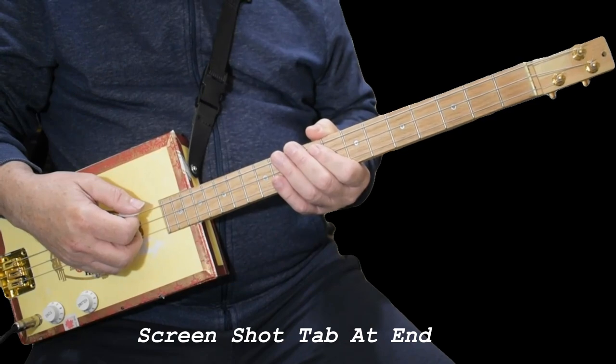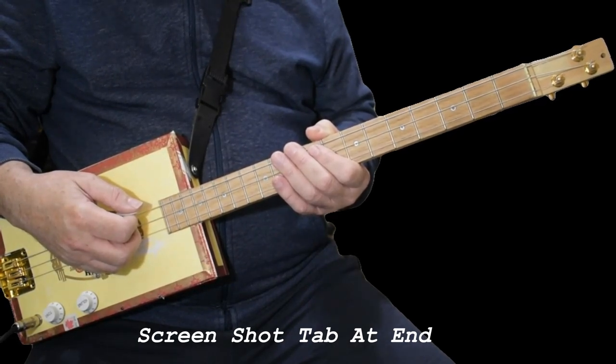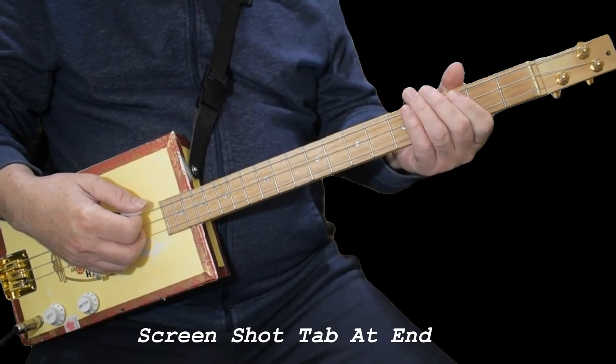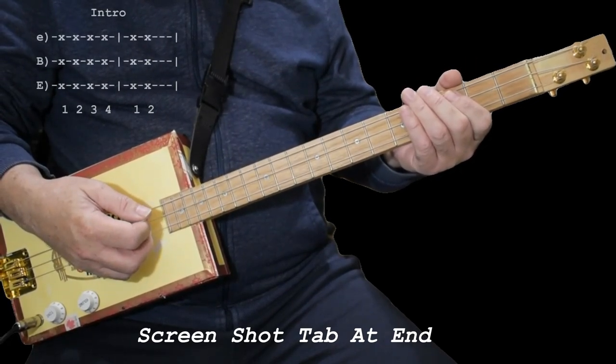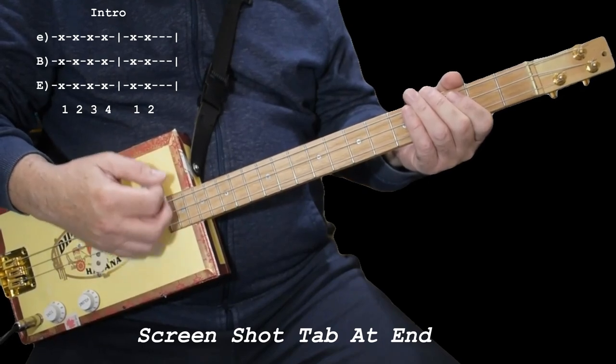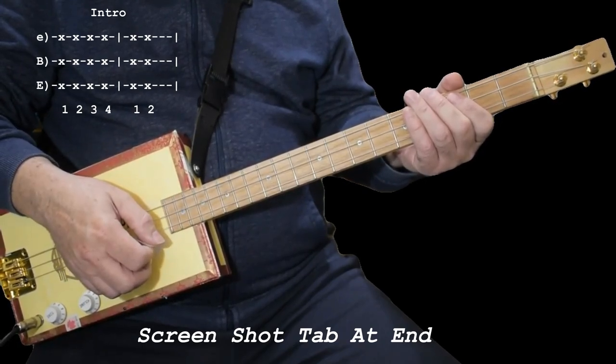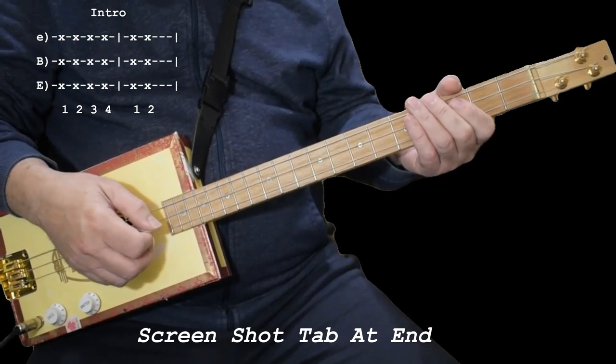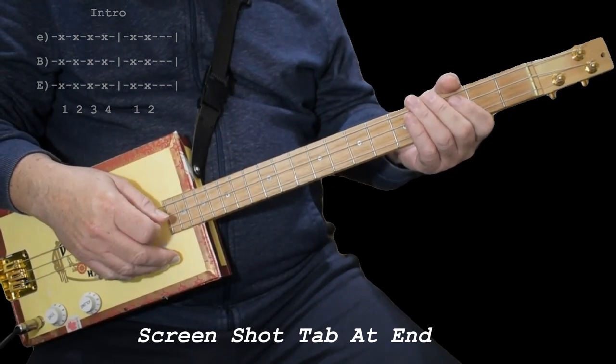There's four parts to this song, not including the little intro. I'll get the intro out of the way right now. You just mute your strings wherever it sounds best to you, and you go 1, 2, 3, 4, 1, 2, 3, 4, and then you start the song. So that's the easiest part, I don't even count that part.